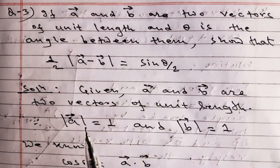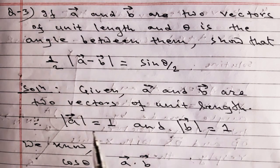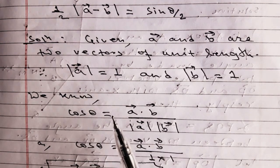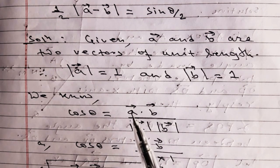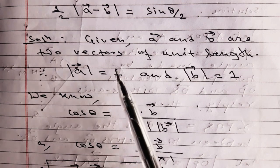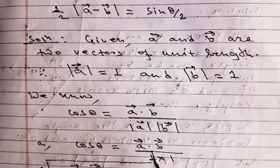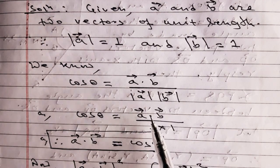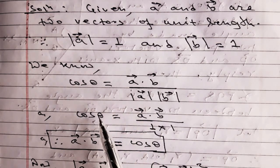We know cos θ = (A · B) / (|A| × |B|). Since |A| = 1 and |B| = 1, we get cos θ = A · B / (1×1) = A · B. Therefore the value of vector A dot vector B equals cos θ.